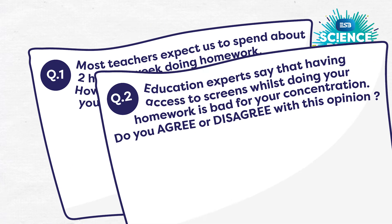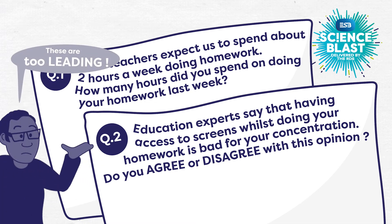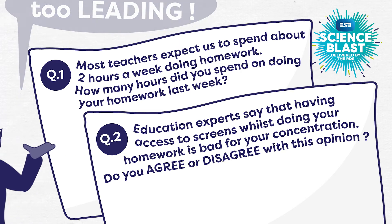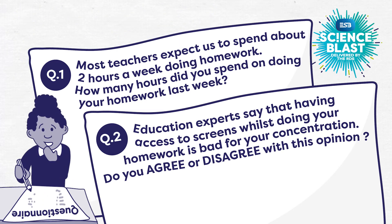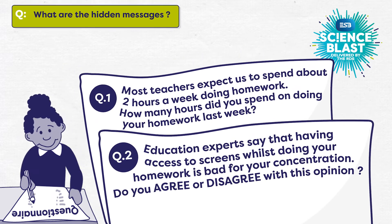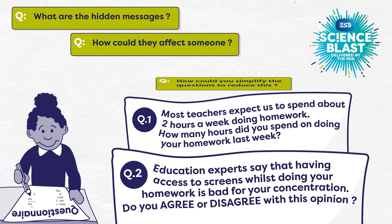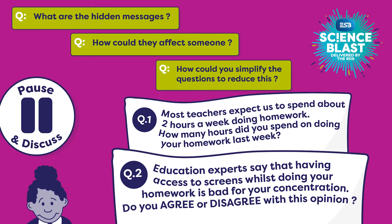Here are two of the questions that Sean's group proposed for their survey. We're pretty sure that a scientist would say that these questions are too leading. In other words, they contain hidden messages that might affect how some people will answer them. Can you see the hidden messages? How could they affect someone? How would you simplify the questions to reduce this?